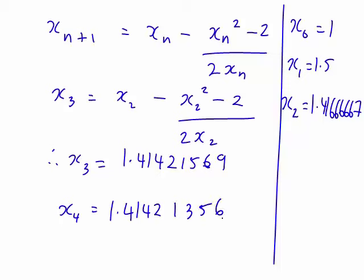So, have a look at those approximations now. They're becoming very similar indeed. What you'll notice with x₃ and x₄, how many decimal places are the same there before we get a different value?